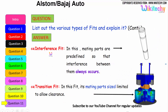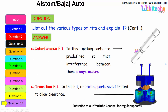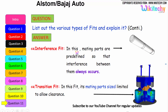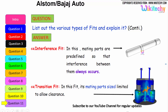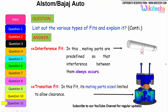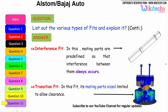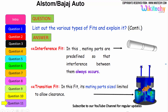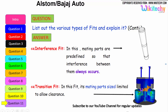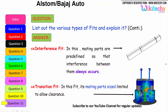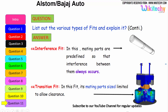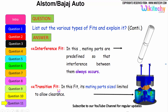In an interference fit, the mating parts are predefined so that interference between them always occurs. The final one is transition fit — in this fit, the mating parts' sizes are limited to a low clearance, so you should not have exact fitting as it may cause failure. That is your transition fit.